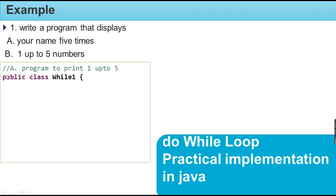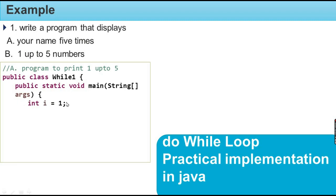Now let's write the full program. The class name is `public class While1`. In the main function, we declare a variable and initialize it. We assign a value to start counting. `int i = 1` — this is our count variable initialized to 1.